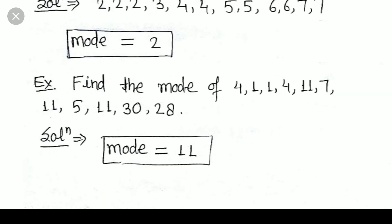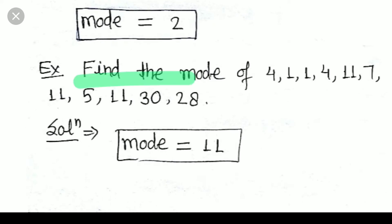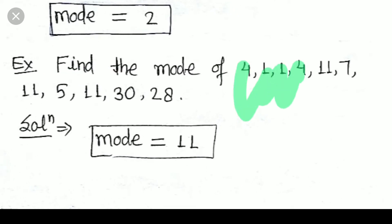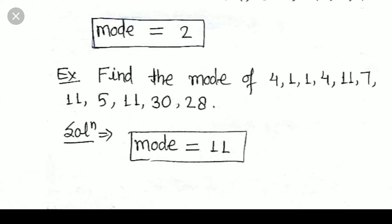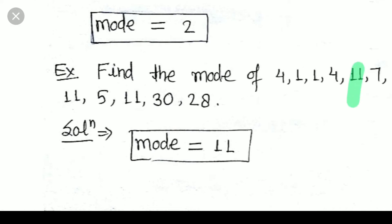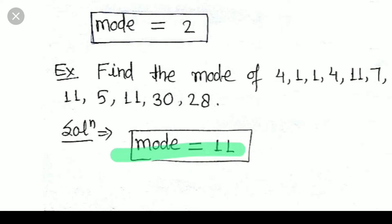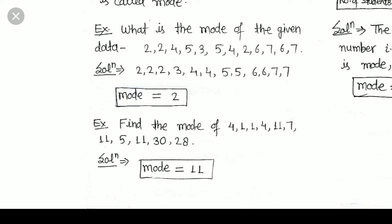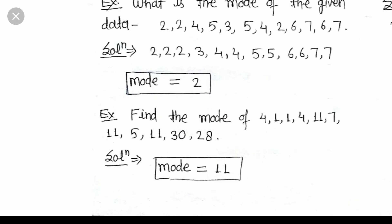Next example: what is the mode of the values 4, 1, 1, 4, 11, 7, 11, 5, 11, 30, 28? You can see that 11 appears 3 times, 4 appears 2 times, 1 appears 2 times, and 7 appears 1 time. So 11 is the value which appears the maximum number of times, and the mode is 11. There is no formula needed — this is the simple way to find the mode.